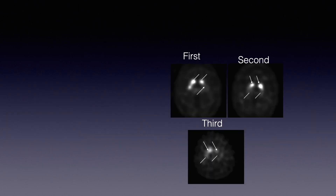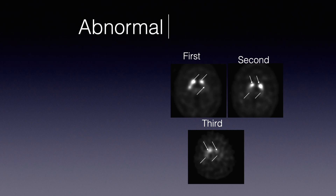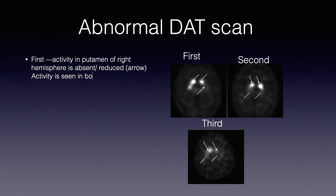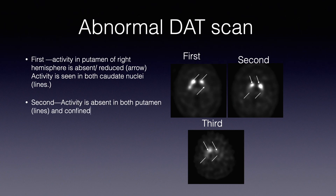The following three images demonstrate an abnormal DAT scan. The first image demonstrates activity in the putamen of the right hemisphere which is absent or reduced, as shown by the arrow, while activity is seen in both caudate nuclei, shown by lines. In the next image, activity is absent in both the putamen, as shown by the lines, and confined to the caudate nuclei, as shown by the arrows.